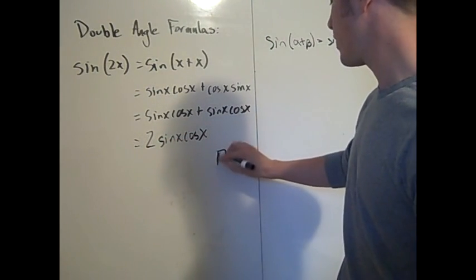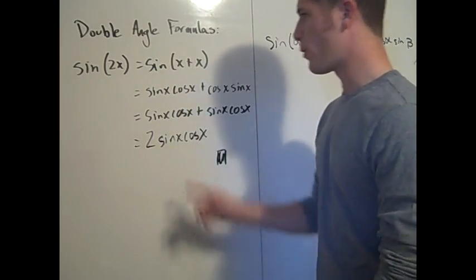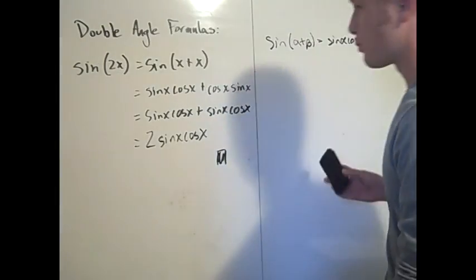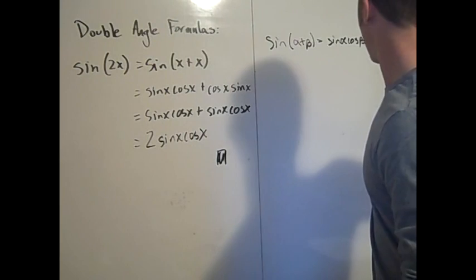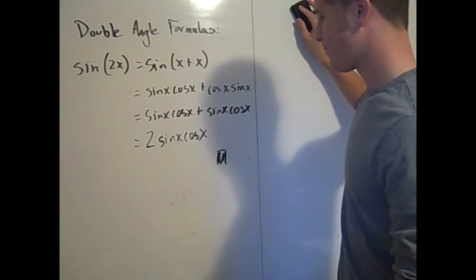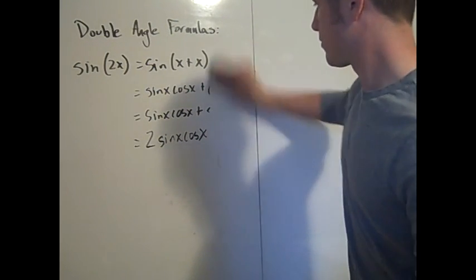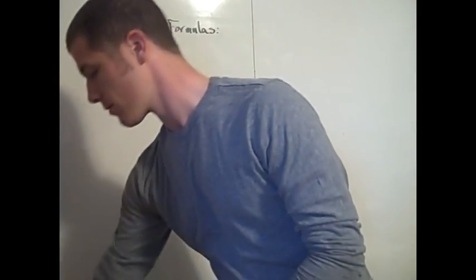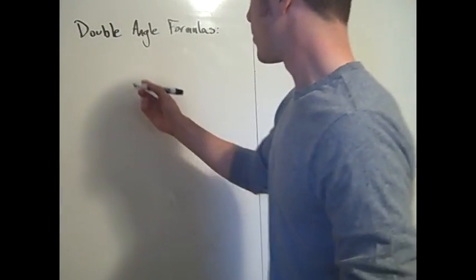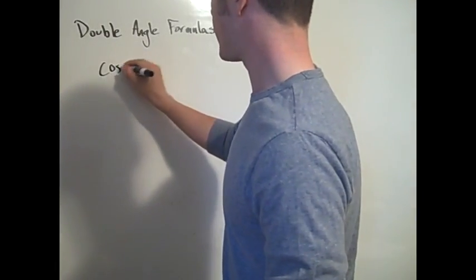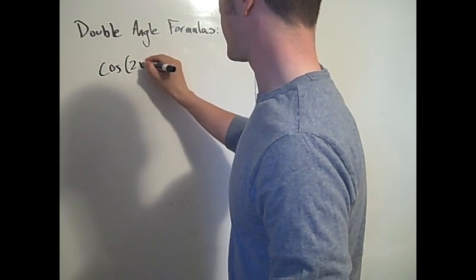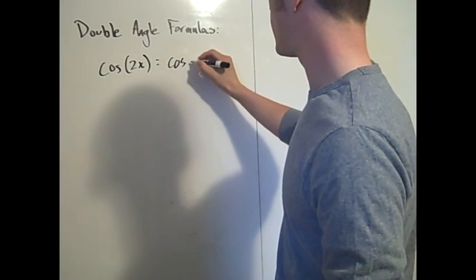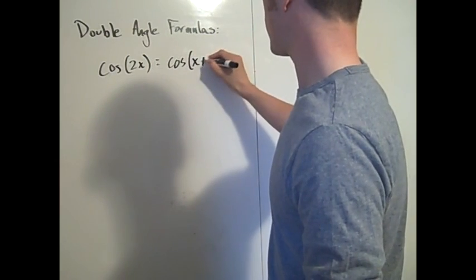Now let's prove the double angle formula for cosine. For cosine, cosine 2x equals cosine of x plus x. For this one, there are actually three different forms that you should know when working trigonometric identities.